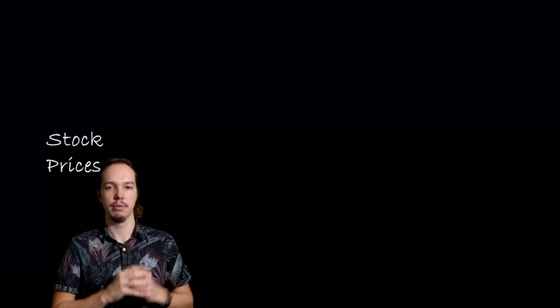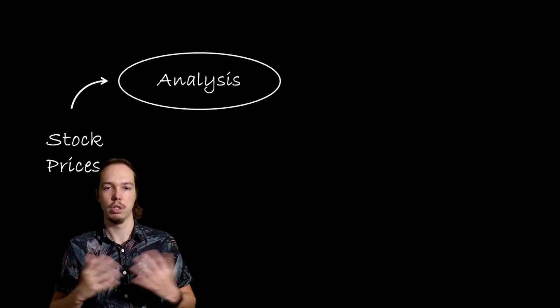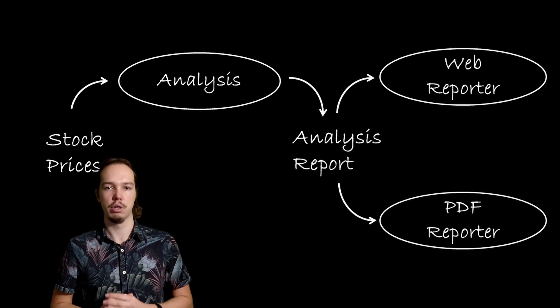The open-close principle can be applied to all layers of software development. Let's look at applying it at a component level with a slightly more complex example — an application for stock market analysis. The system gets data from the stock exchange, runs market analysis algorithms on price changes, and the results should be shown on a web page as well as be printable to PDF format. If we apply the single responsibility principle, we might come up with a data flow diagram like this one.